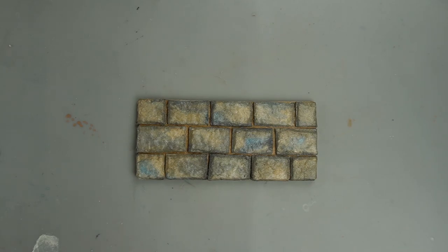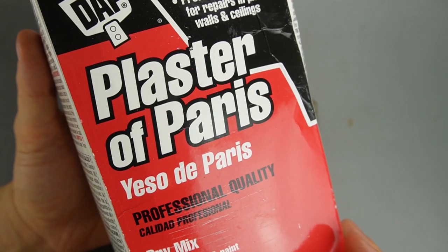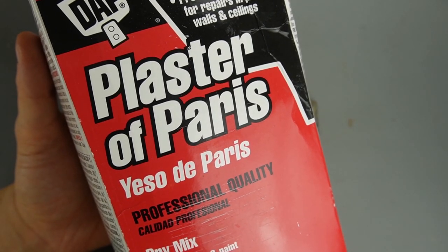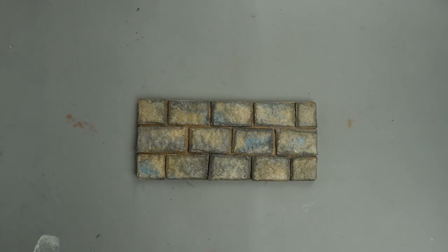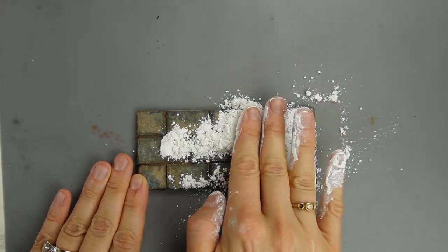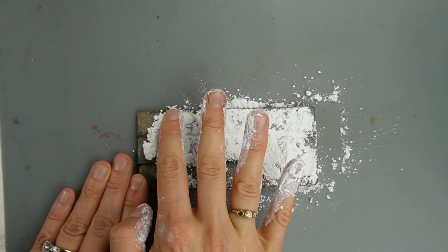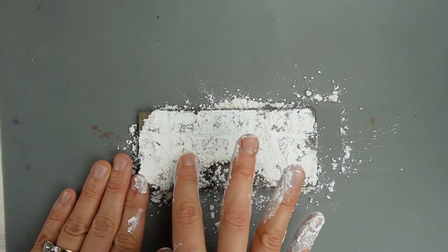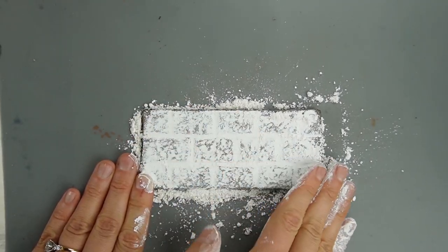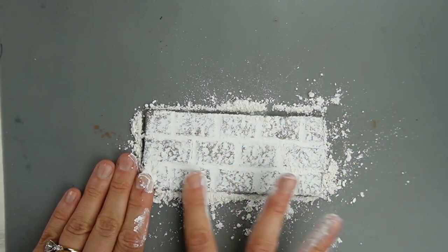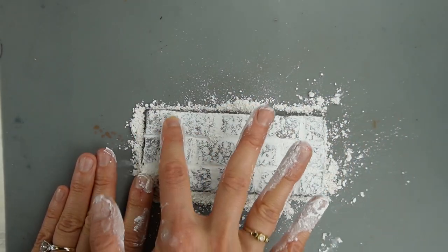Now it's time to apply the grout and I'm using a dry method with plaster of Paris. And to protect my lungs I'm wearing a dust mask. To apply the grout I just sprinkle it on with my hand making sure to spread it into my grout lines. I'm pressing the powder in to compact it into the cracks. This method works best on small grout lines like the ones I created.